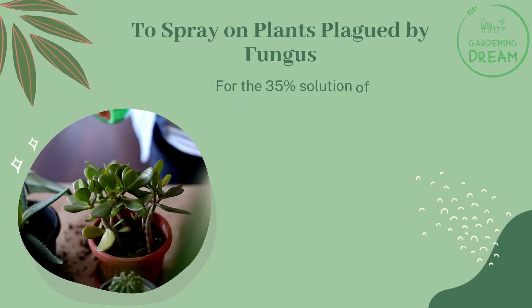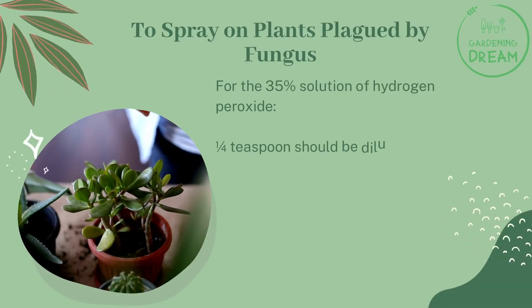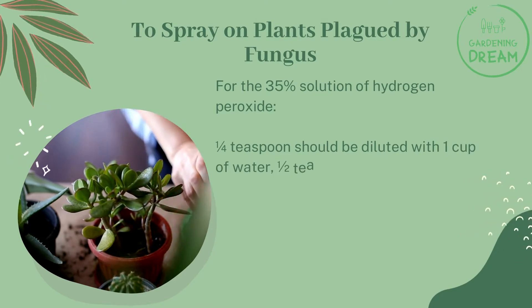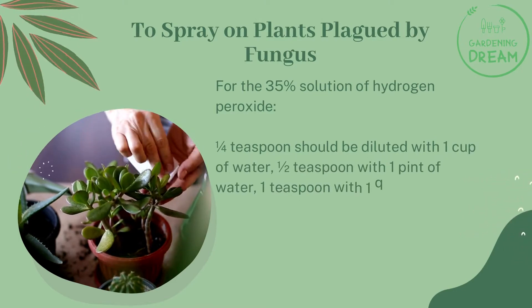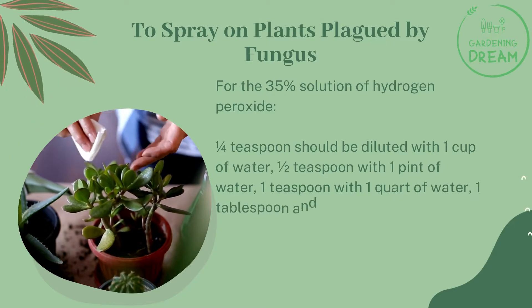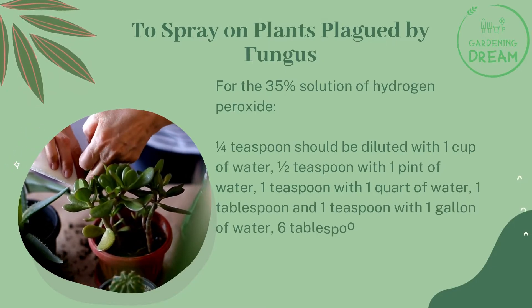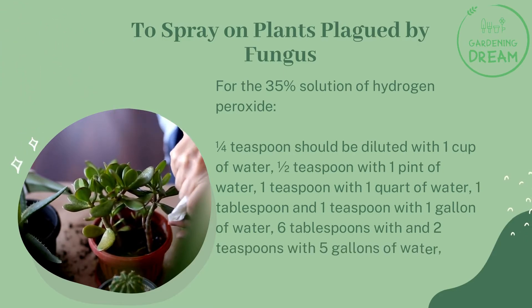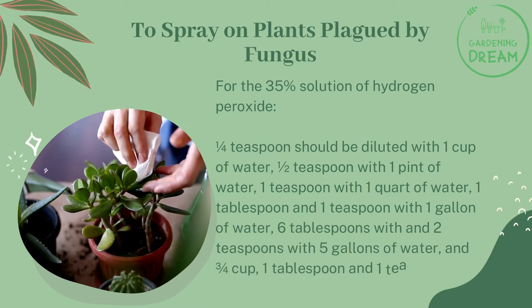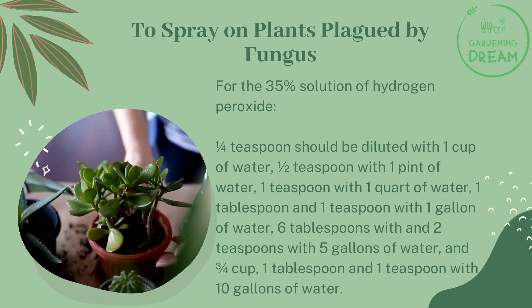For the 35% solution of hydrogen peroxide used to spray on plants plagued by fungus: one quarter teaspoon diluted with one cup of water; half teaspoon with one pint of water; one teaspoon with one quart of water; one tablespoon and one teaspoon with one gallon of water; six tablespoons and two teaspoons with five gallons of water; and three-quarters cup, one tablespoon, and one teaspoon with ten gallons of water.